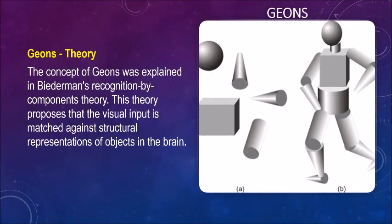Geons Theory: The concept of Geons was explained in Biedermann's Recognition-by-Components theory. This theory proposes that the visual input is matched against structural representations of objects in the brain.